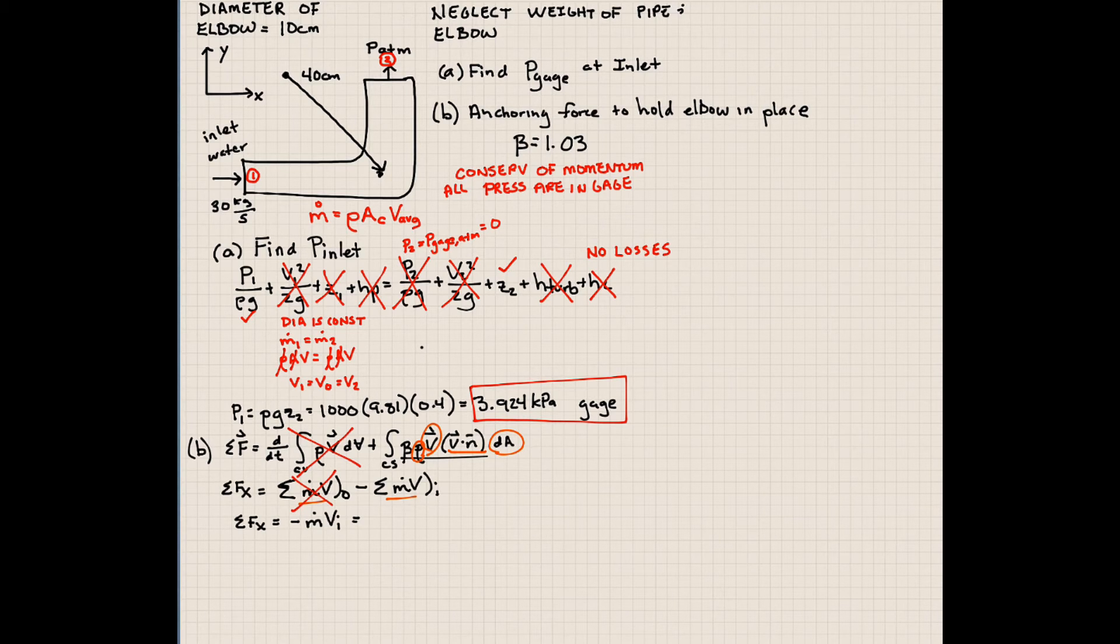So minus mass flow rate, and I can put the beta term here too. So this is minus 1.03 times mass flow rate which is 30 kilograms per second, times the velocity at the inlet which we don't know yet. So let's calculate the velocity at the inlet.